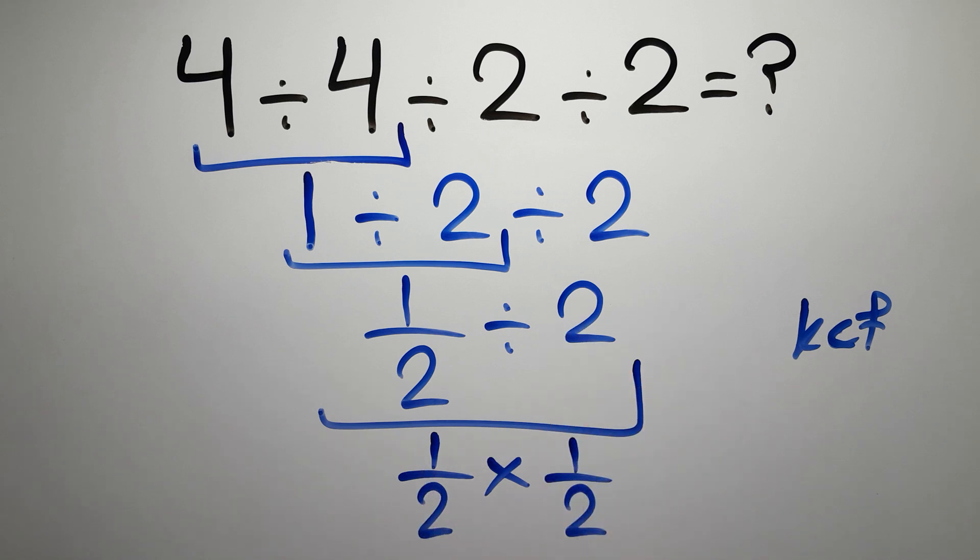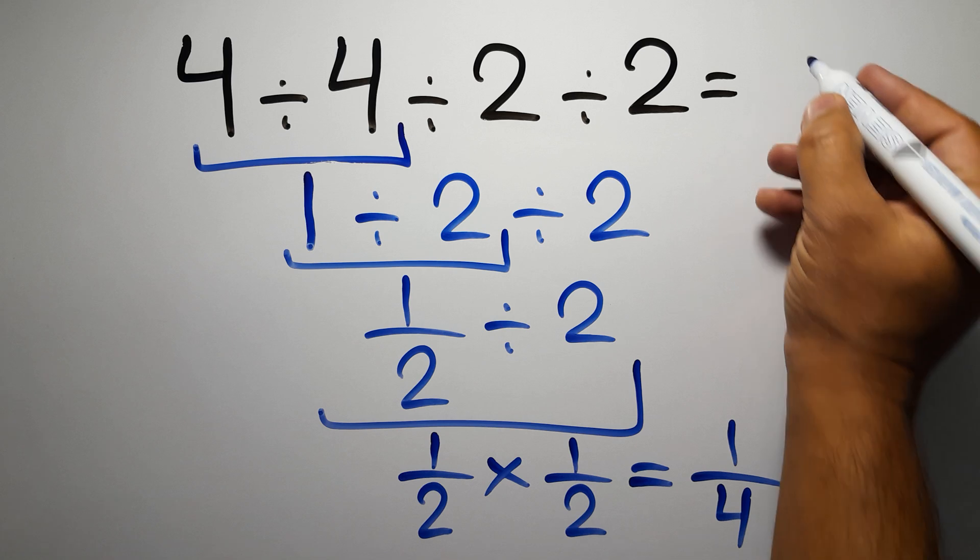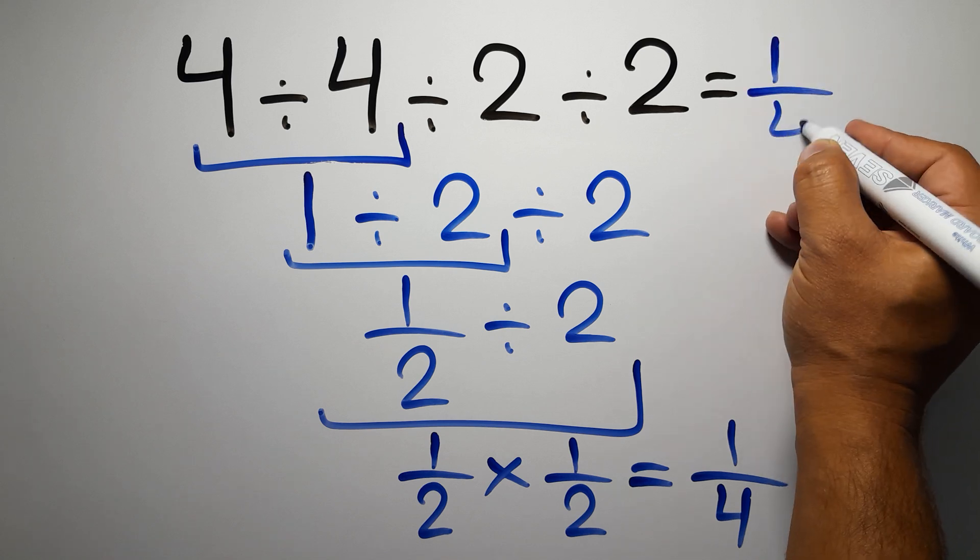Which equals 1 over 2 times 2, which gives us 4. So 1 over 4, and this is our final answer to this problem. The correct answer is 1 over 4.